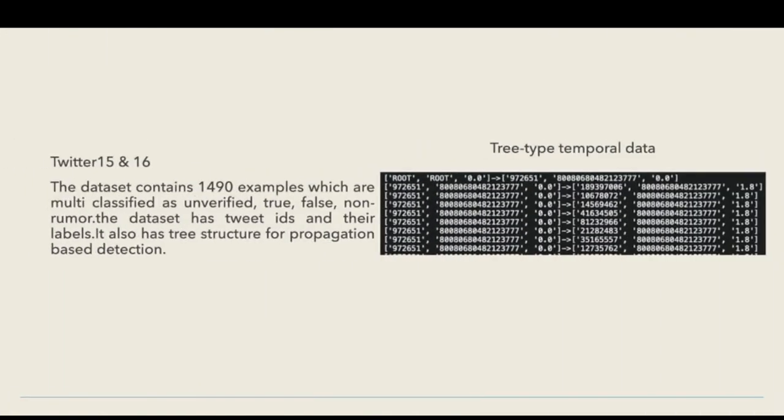In Twitter 15 dataset, different number of examples are there and are multi-class classified as unverified, true, false, and non-rumor. It also has three type temporal data which can be used for temporal as well as propagation based detection. Using these different types of datasets, we have acquired variety of skills by seeing which column is most important and then implementing that column in our model.